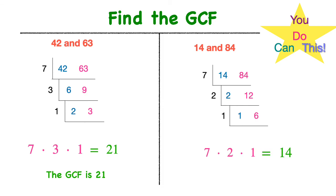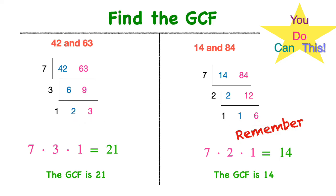I multiply those shared factors together to get a product — and it's also the greatest common factor. So the greatest common factor of 14 and 84 is 14. We want to make sure our greatest common factor is less than or equal to the numbers in the set. So 14 is equal to the number 14 in my set — that's fine — and 14 is less than 84, and that's fine as well.